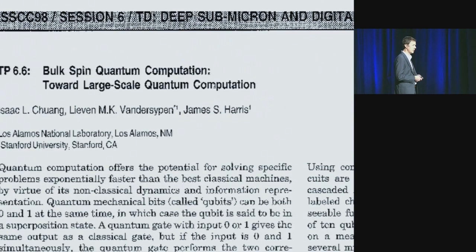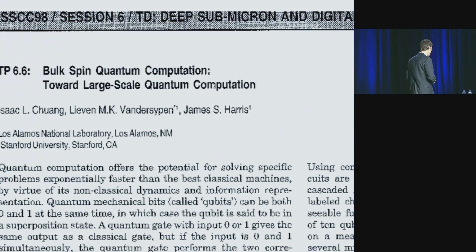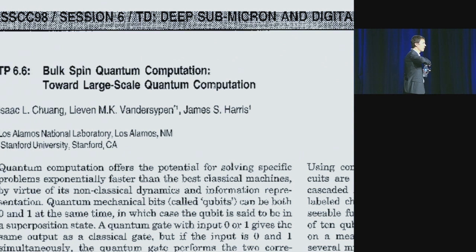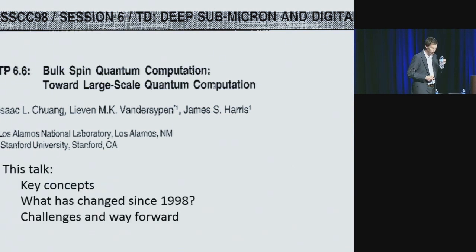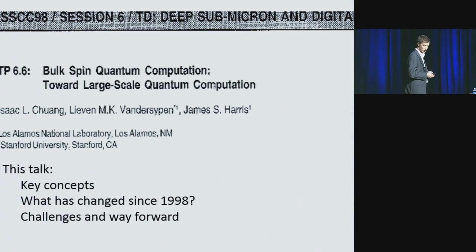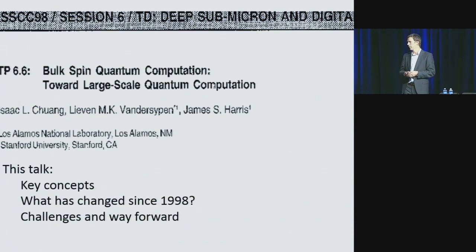This notion really got traction in the mid-90s, when the first algorithms and applications were discovered for taking advantage of quantum properties for speeding up computation. This also sparked early interest at ISSCC. Nineteen years ago, here in San Francisco, I co-authored a paper describing how to use the spins of atomic nuclei in a molecule to build simple quantum processors. In this talk, I'd like to tell the story of quantum computing, beginning with key concepts, what has changed since 1998, and the challenges standing in the way of a large-scale machine and how we can overcome them.